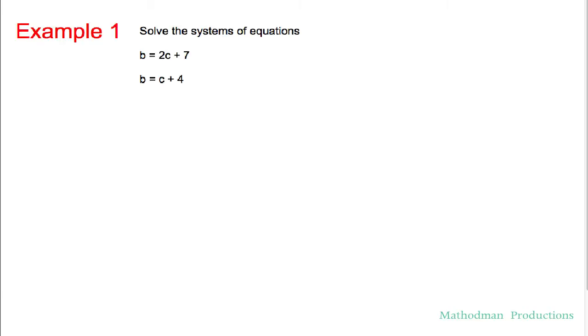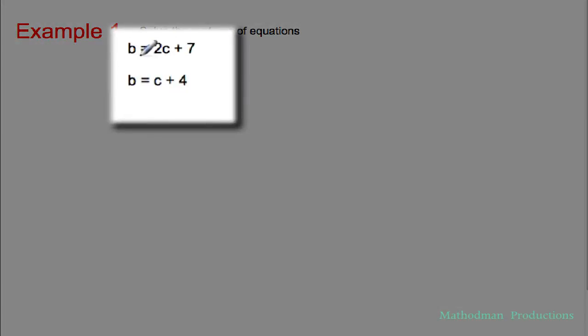Alright, just to review, when you're solving for systems, you want to solve for both variables. You want to have a value for both b and c.